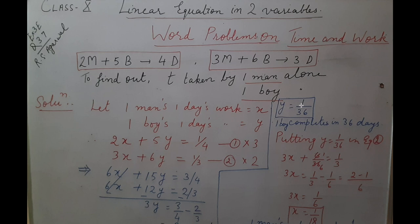3y is 1 by 12, that means y is 1 by 36. What is y? It is 1 boy's 1 day work. So 1 by 36 part he finishes the work in 1 day, that means complete time it takes is 36 days.